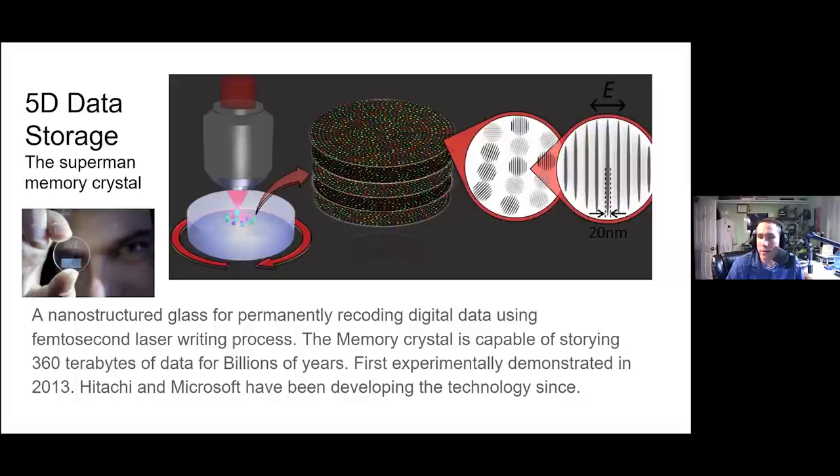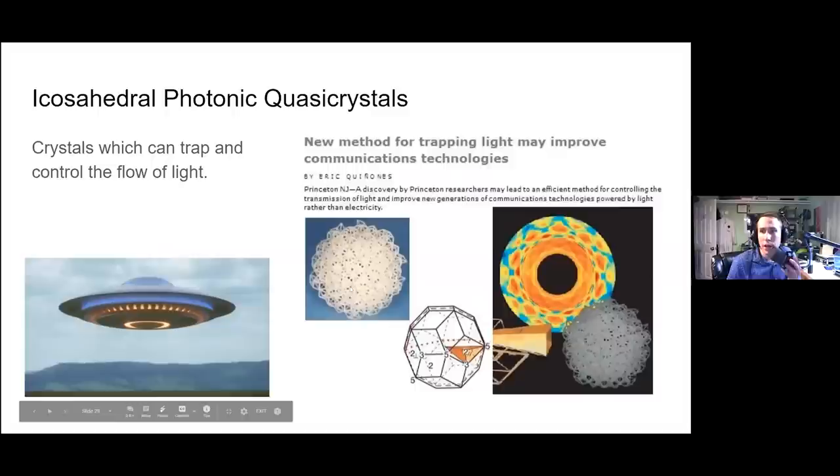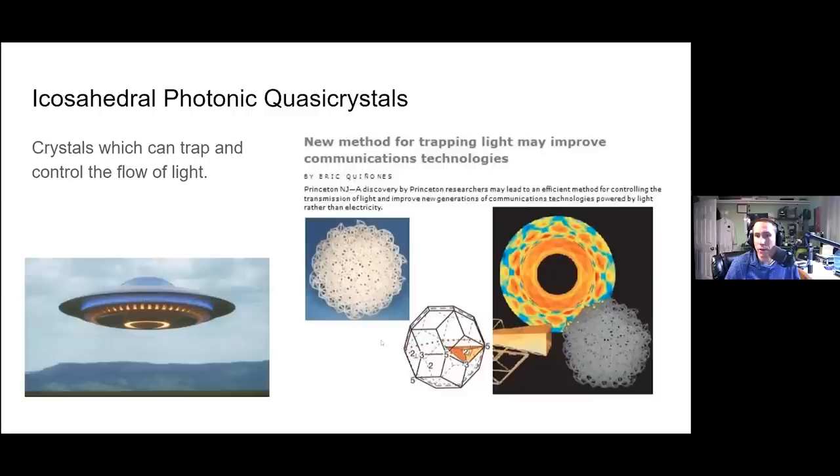It has a really stable structure. It can last really long periods of time, much longer than a floppy disk drive or a magnetic disk or even a CD. First experimentally demonstrated in 2013. Hitachi and Microsoft have been developing this technology ever since. Quasicrystals are used, this is an Eric Quiñones article from Princeton University. Their researchers built a scale model of a quasicrystal using a bunch of straws. The straws were the length of the wavelength of microwave radiation that they shot out of this horn at it. And they noticed that it refracted, it basically reflected those signals at 90 degree angles with a perfect reflection without losing signal quality.